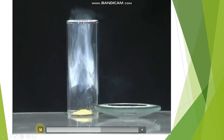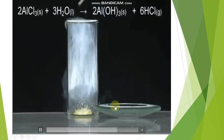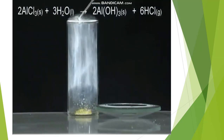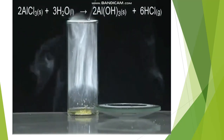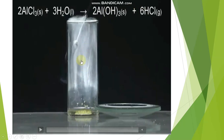When aluminum chloride reacts with water it produces aluminum hydroxide Al(OH)₃ and HCl. The solid aluminum hydroxide remains, while the HCl is released as fumes. The fumes of HCl are visible, and the aluminum hydroxide remains as the solid form.